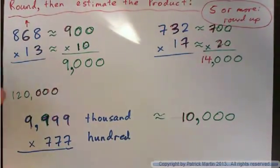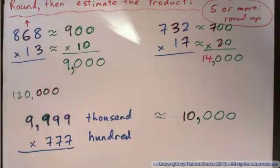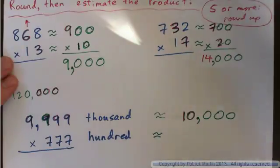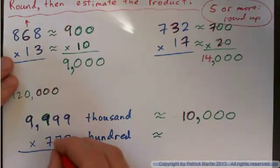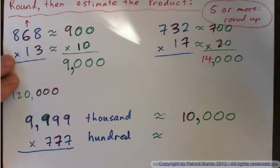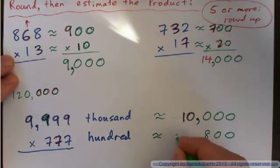Then we have round this guy to the nearest hundred. What would that be? You've got a seven, and then a hundred spot, and then a seven after it. So, would you round that up or down? You'd round it up to eight hundred.